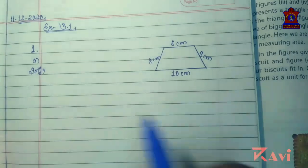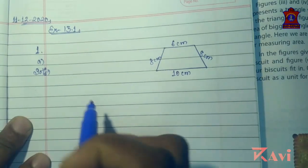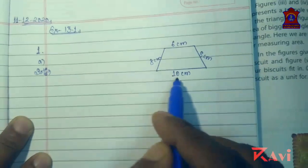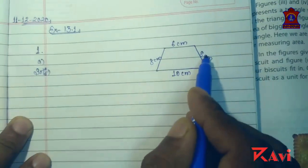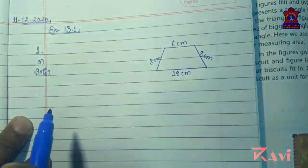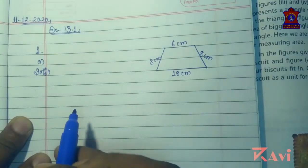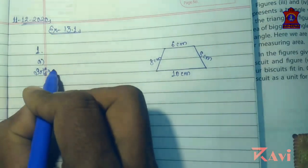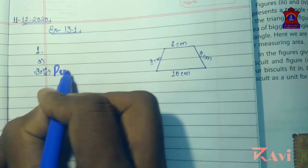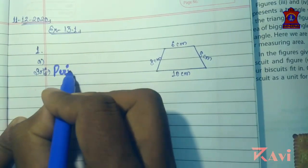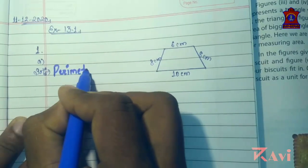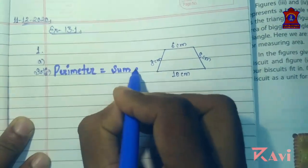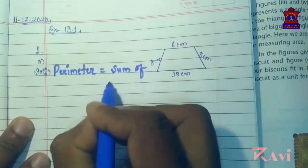We will be finding the perimeter of this figure with sides 10 centimeter, 8 centimeter, 6 centimeter, and 8 centimeter. Here the formula is not applicable, so you will be writing: perimeter equals sum of all sides.